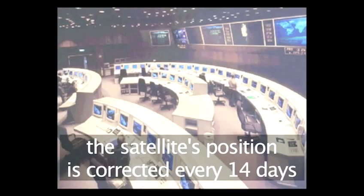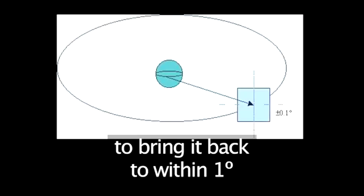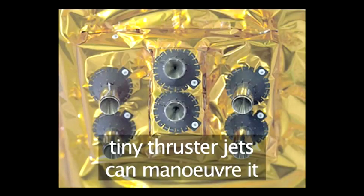Engineers are able to adjust the satellite about once every 14 days to bring it back into its favored one-degree position. This maneuver is done with tiny jets the size of matchsticks.